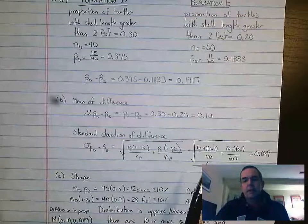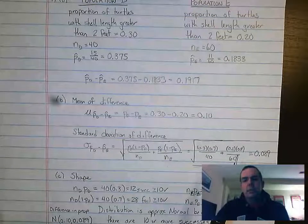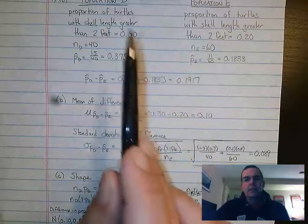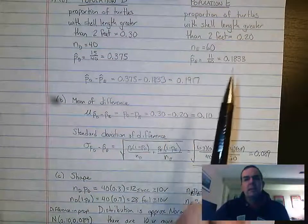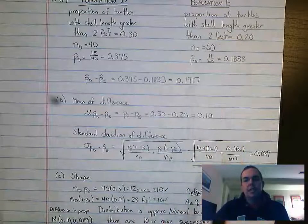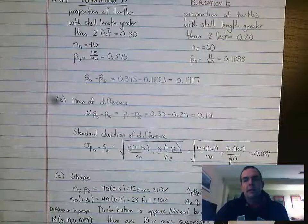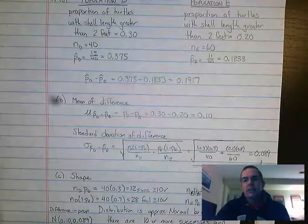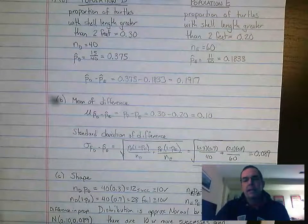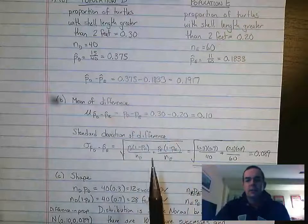Plus 0.2 times 0.8. Again, the 0.3 from here comes here, the complement 0.7. The 0.2 from population e times its complement 0.8 over 60. When we go ahead and do that in our calculator, we end up with a standard deviation of 0.089.